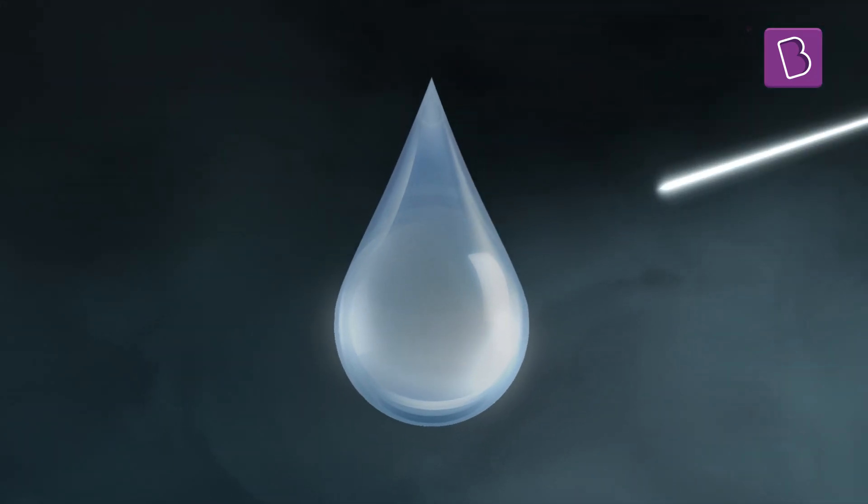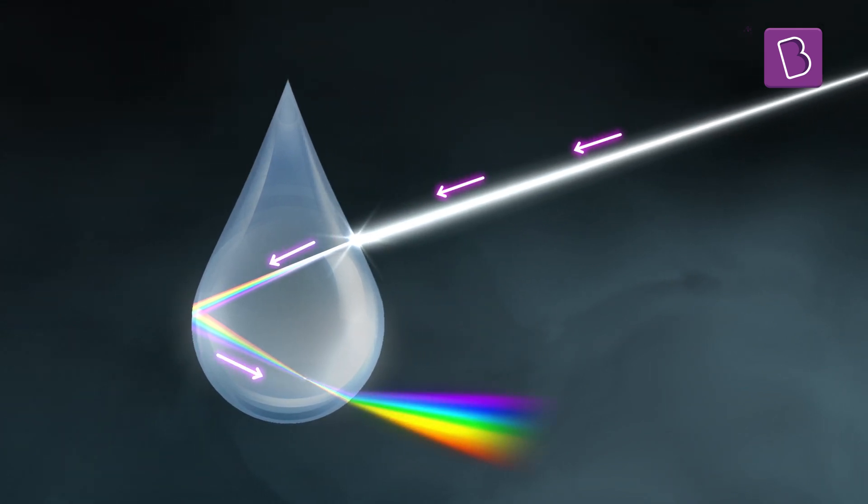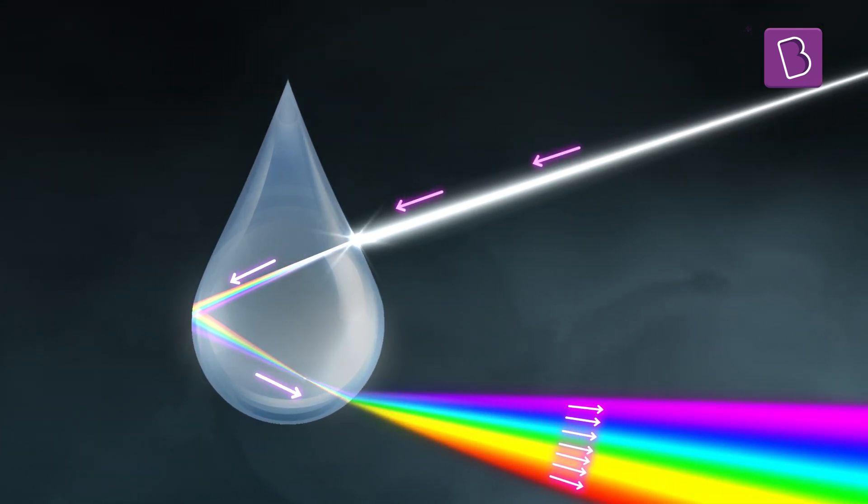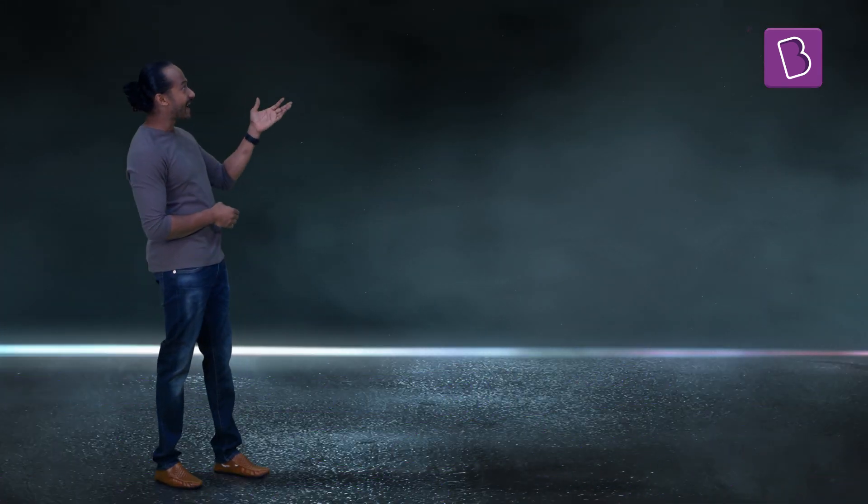Nature has its very own prisms. When it rains, water droplets get suspended in the atmosphere, and sunlight traveling through air falls on these water droplets. The droplets will refract and hence split light into seven colors, just as a prism does. Yes, a rainbow is in the making.